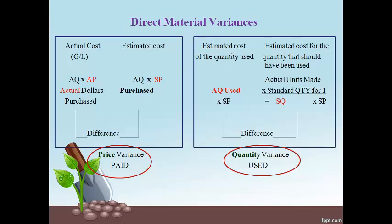The right side of the variance calculation analyzes the quantity used. The actual quantity used from the inventory report is multiplied by the standard price to get the estimated cost of that actual quantity used. This is compared to the estimated cost of the quantity that should have been used to make all of the units. The SQ, or standard quantity, is the quantity that should have been used, multiplied by the standard price to get the estimated cost of direct materials to actually make all of the products.